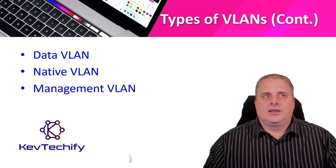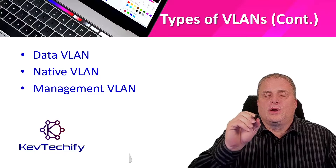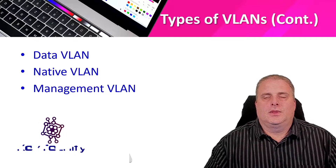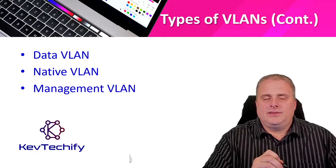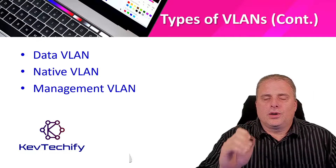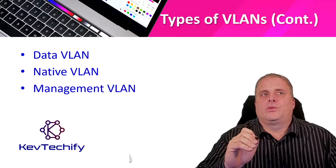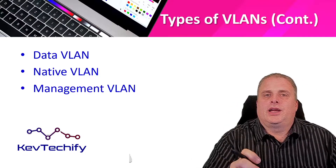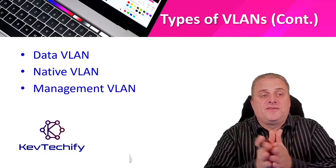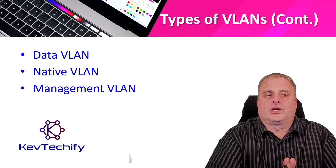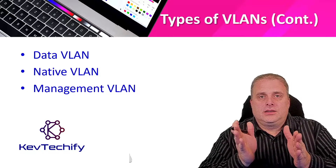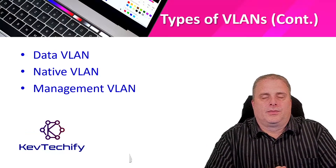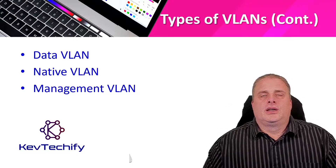The native VLAN is used only on trunk links, and it applies when a frame comes in and is not tagged. All other frames going across the trunk port are tagged with the 802.1Q protocol — a small piece of information is put in the header identifying which VLAN that traffic belongs to. If a frame is not tagged, it goes into the native VLAN so we can identify it and track it through the system. This is specifically for our untagged traffic.